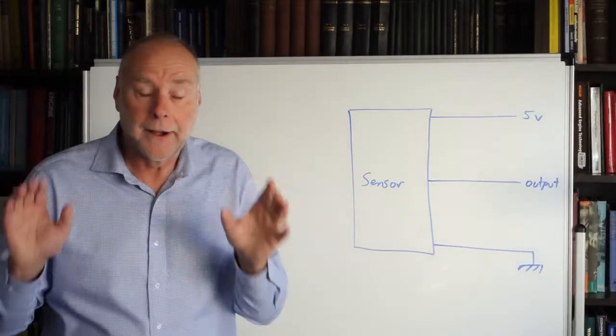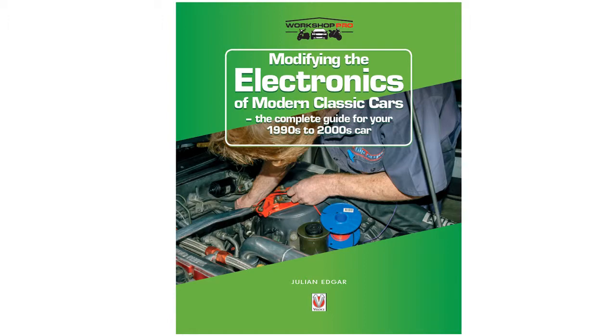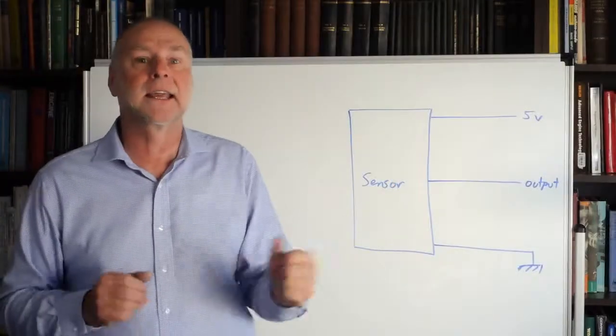Hello, my name's Julian Edgar and I'm the author of the book Modifying the Electronics of Modern Classics. It's designed for people who've got cars from the 1990s and the next decade.